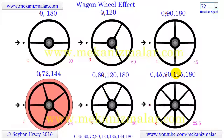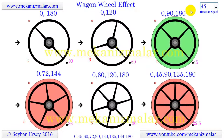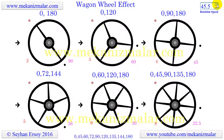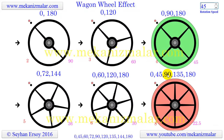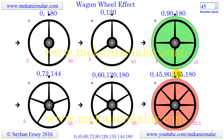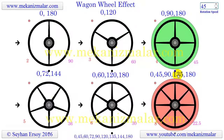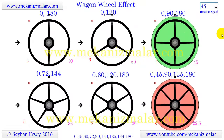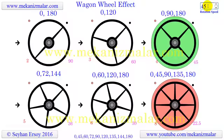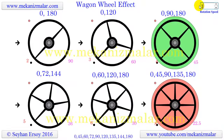For example, for an 8-spoked wheel, 360 divided by 8 gives us 45. Multiply this by 2 and we get 90. If you multiply 45 by 3 we get 135. At all these angles we will see the 8-spoked wheel as standing still. This logic will be true for different numbered spoked wheels as well.